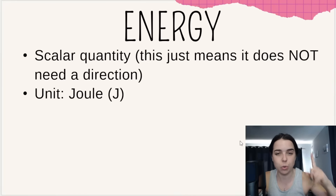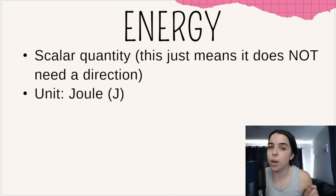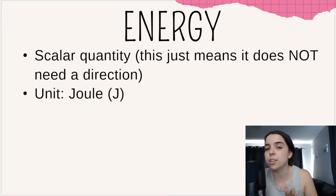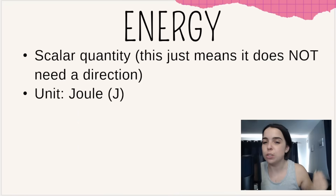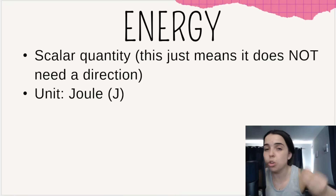Energy is defined as the ability to do work. When you are doing work, you are exerting energy. In grade 12 you'll learn more about how the ability to do work relates to exerting a force that causes an object to move or have displacement. Keep the terms energy and work closely connected. In grade 10, energy is a scalar quantity — it does not need a direction in its answer.